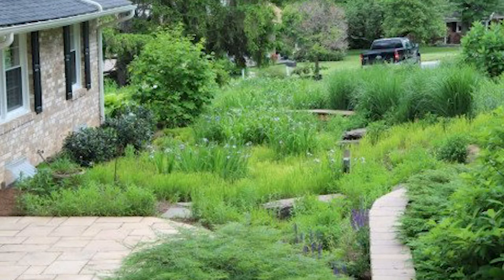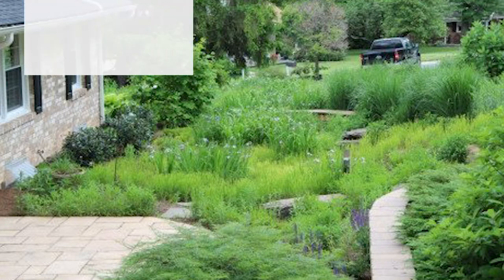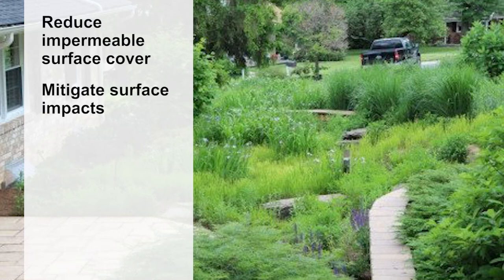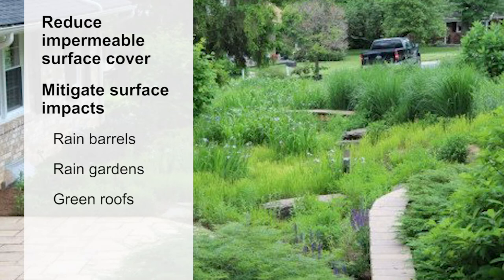There are a variety of ways you can reduce the effects of stormwater on your property. The first is to reduce the amount of impermeable surface cover on your property or mitigate impermeable surface impacts. Some examples include rain barrels, rain gardens, or green roofs. Shown here is a large rain garden replacing traditional lawn practices, helping to greatly improve infiltration of stormwater.